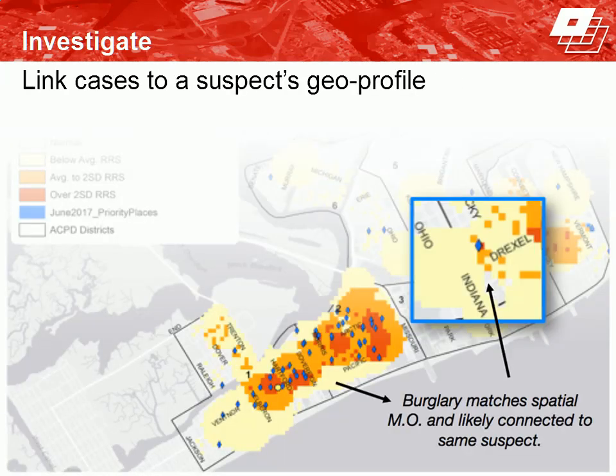RTM also linked open cases to the suspects' spatial profiles. Police ran the risk terrain model on burglary incidents thought to be connected to these offenders to geographically profile their location preferences. Results showed the offenders' cases were located in their preferred areas, shown in red or orange. But there was also a red area way outside in District 5 that had an unsolved burglary. The investigation was reopened, and as it turns out, one of the suspects regularly slept in a house nearby — and this burglary was connected to him too.